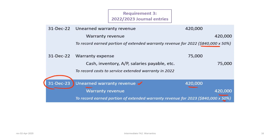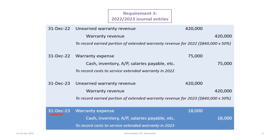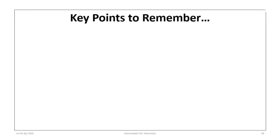For 2023, we recognize the remaining $420,000 of unearned warranty revenue, debiting unearned warranty revenue $420,000 — bringing it to a final balance of zero — and crediting warranty revenue $420,000. We then match actual costs incurred to service the extended warranties in 2023: only $18,000 in costs were incurred, so we debit warranty expense $18,000 and credit cash, accounts payable, salaries payable, or inventory as applicable. This completes the accounting for the extended warranty.